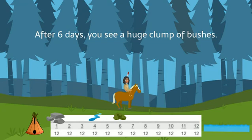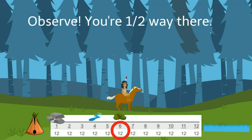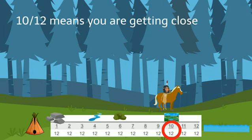After six days, you see a huge clump of bushes. You know that six-twelfths is the same as one-half. You're halfway there. After ten days, you see a bigger lake with trees around it. Ten-twelfths means you're almost there.